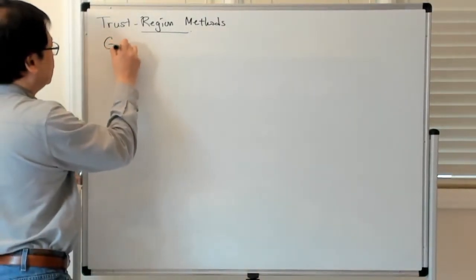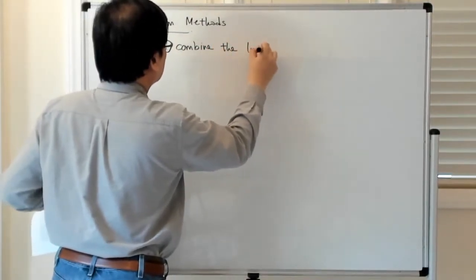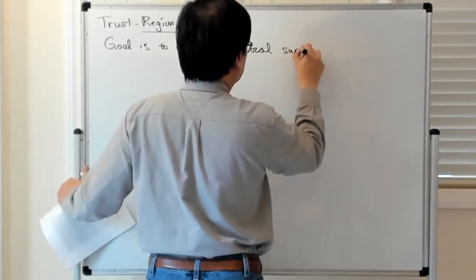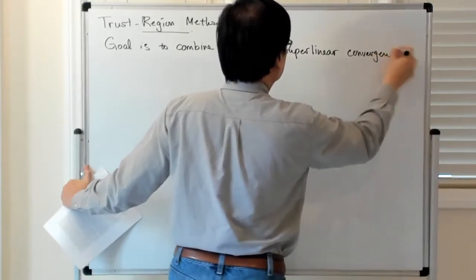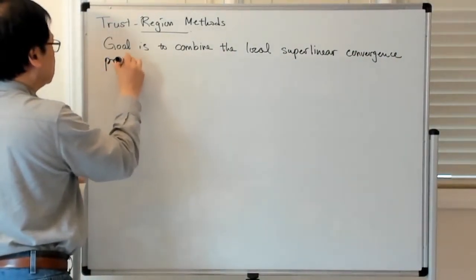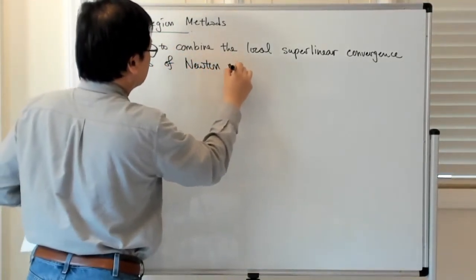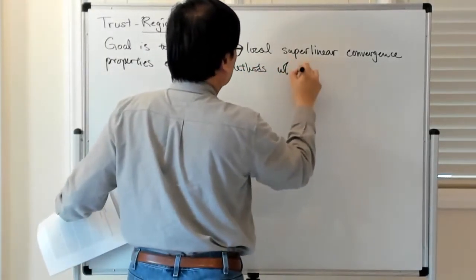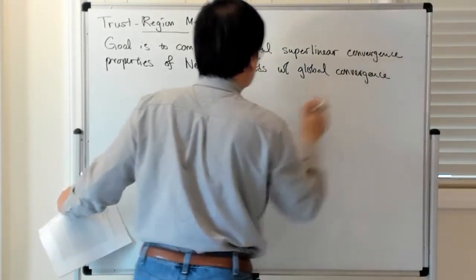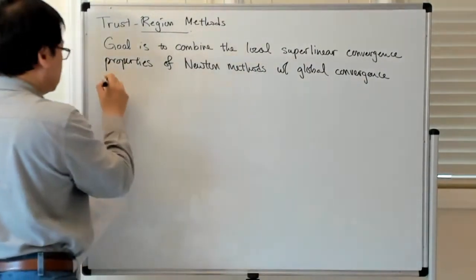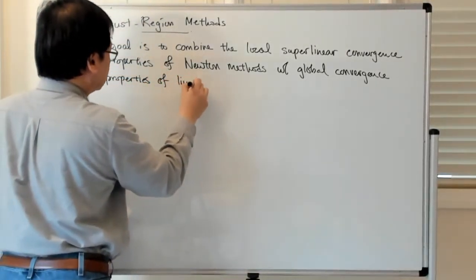The goal is to combine the local super-linear convergence properties of Newton methods with the global convergence properties of line search methods.